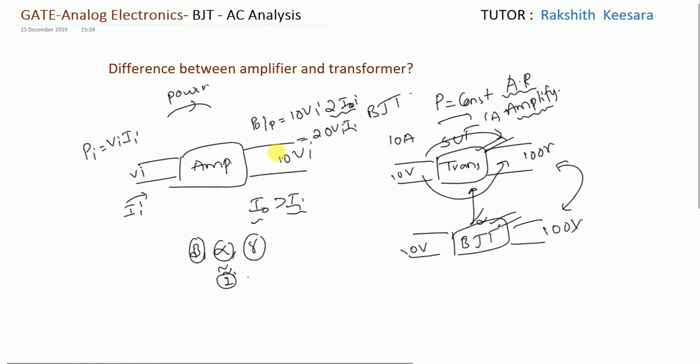So amplifier amplifies power. But generally we will tell that voltage level is increased, it will increase as the power level. Now you may get a doubt. How come output power is greater than input power? Is amplifier creating a new power inside it? It is a logical question.